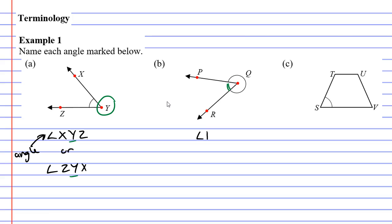It could be either angle PQR or angle RQP, but because we're measuring the angle on the outside, we need to write reflex at the front of it.